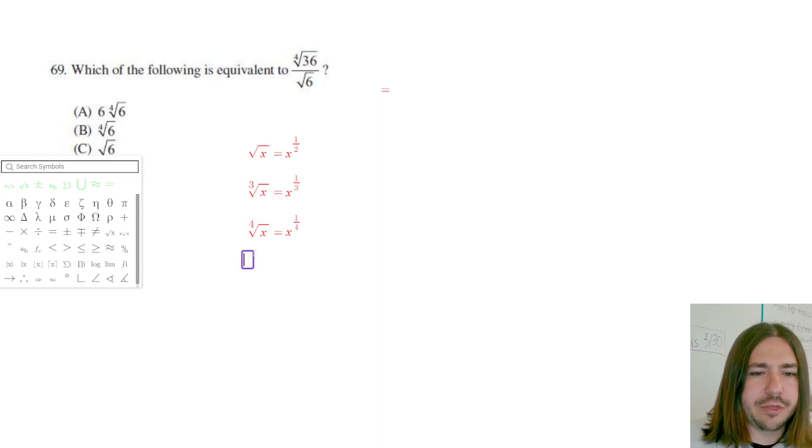So basically, the nth root of x is going to be equal to x to the one over n power. So this is good to know here. So I'm going to rewrite this as a fraction, 36 to the power of one-fourth, divided by 6 to the one-half.